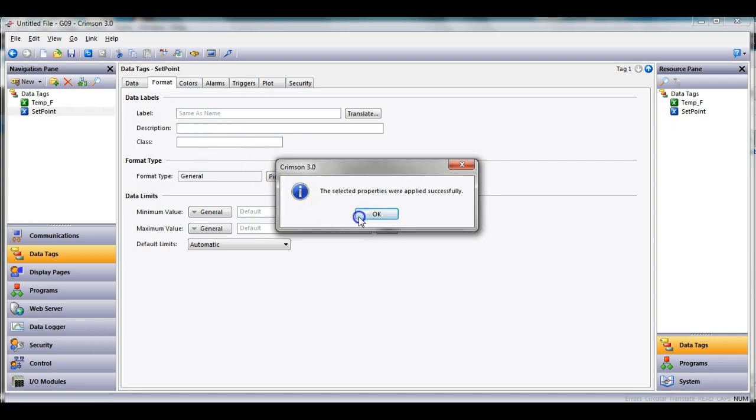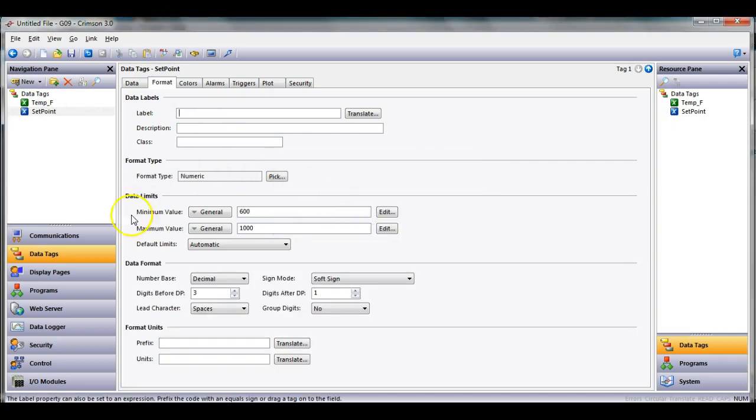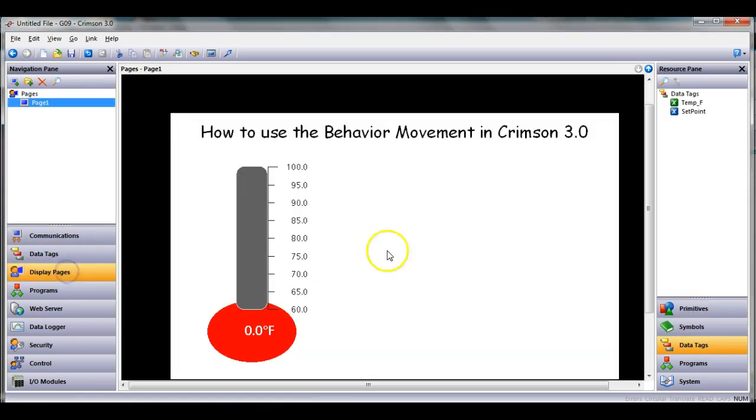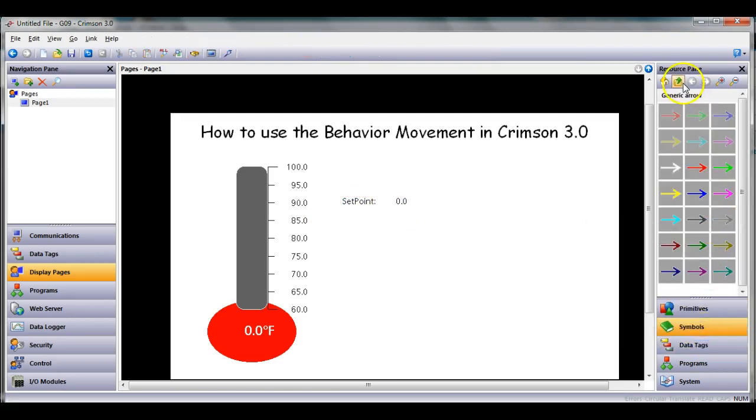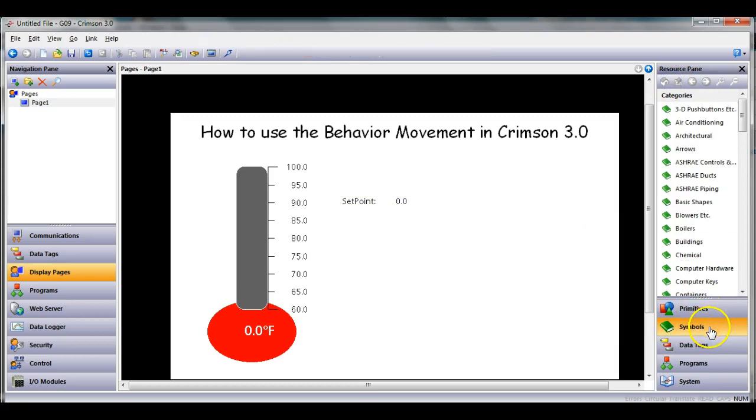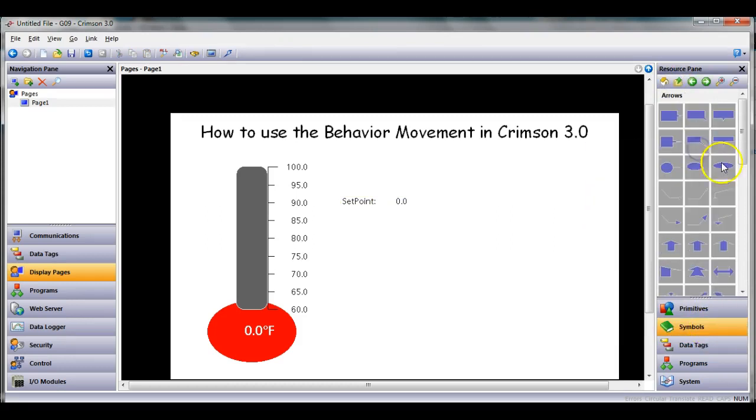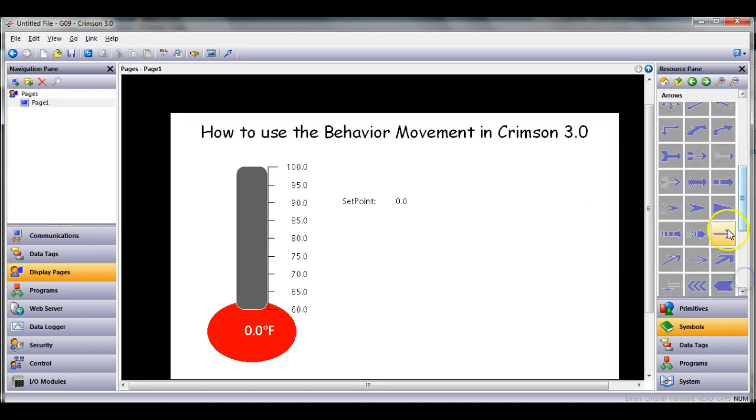Now if I go to display pages, I'm going to drag setpoint on here from the right, drag it out here, and I'm going to make this a little bit different. I'm going to go to the right side, go to symbol factory, go into the category called arrows.